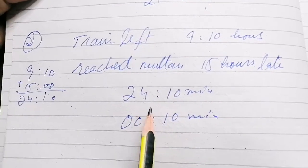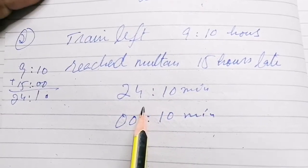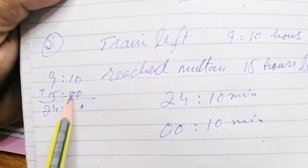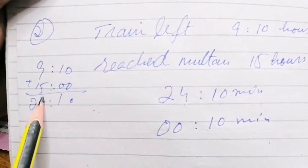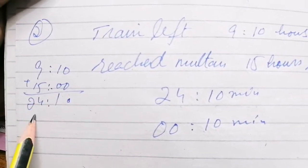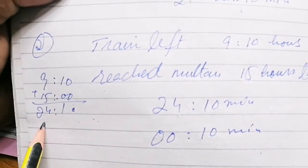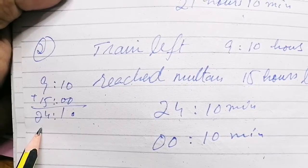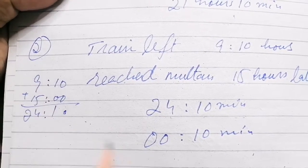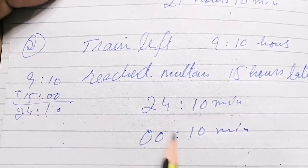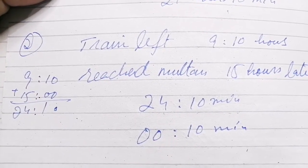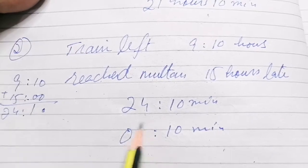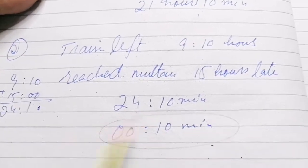So we add 9:10 hours and 15 hours together. That gives us 24 hours and 10 minutes. Since 24:00 equals midnight, the answer is 0010 hours, meaning 10 minutes past midnight.